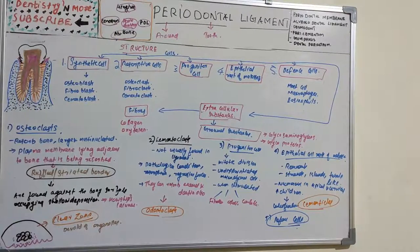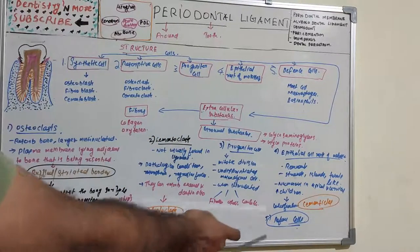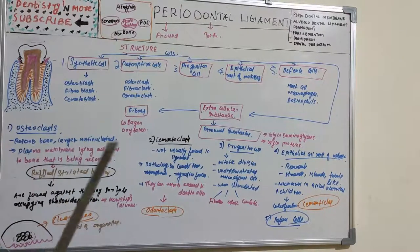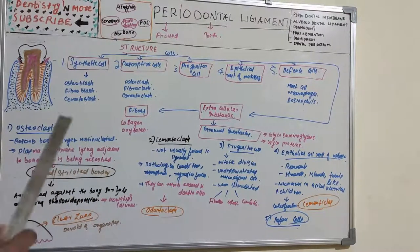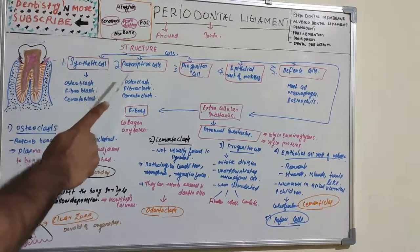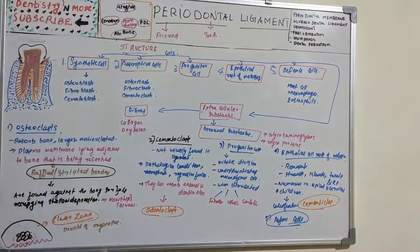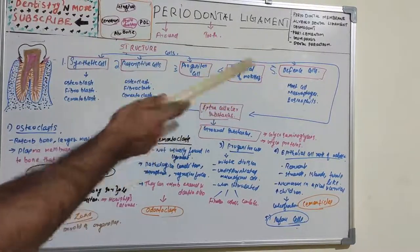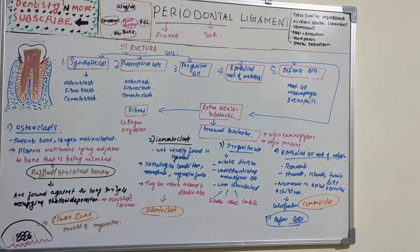Defense cells present in the periodontal ligament include mast cells, eosinophils, and macrophages. Now moving on to extracellular substances, which include fibers and ground substances.